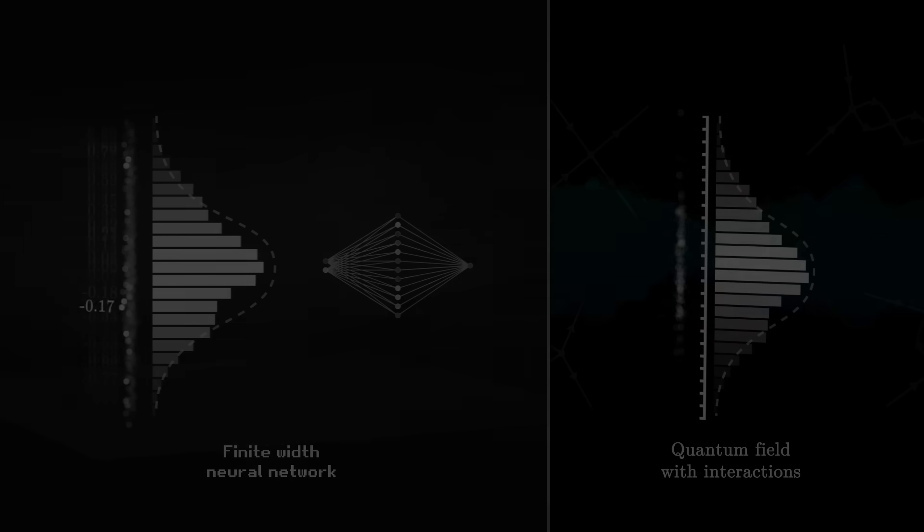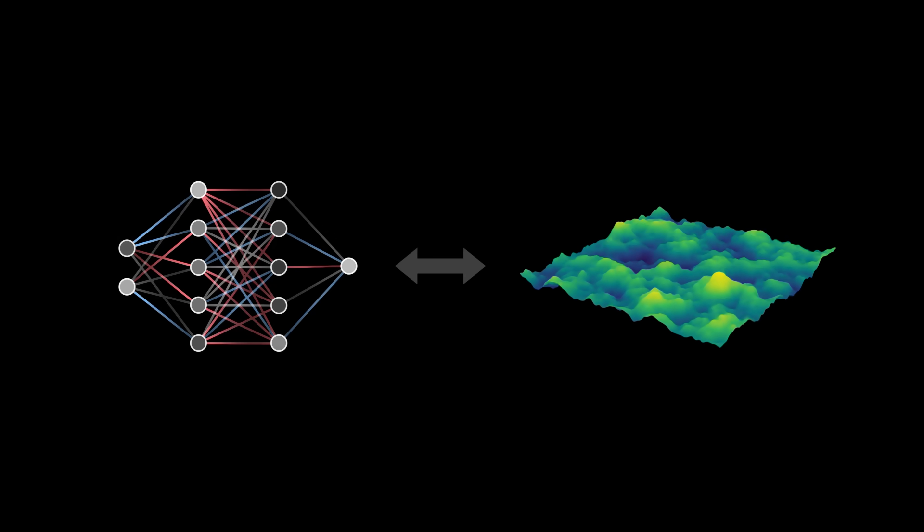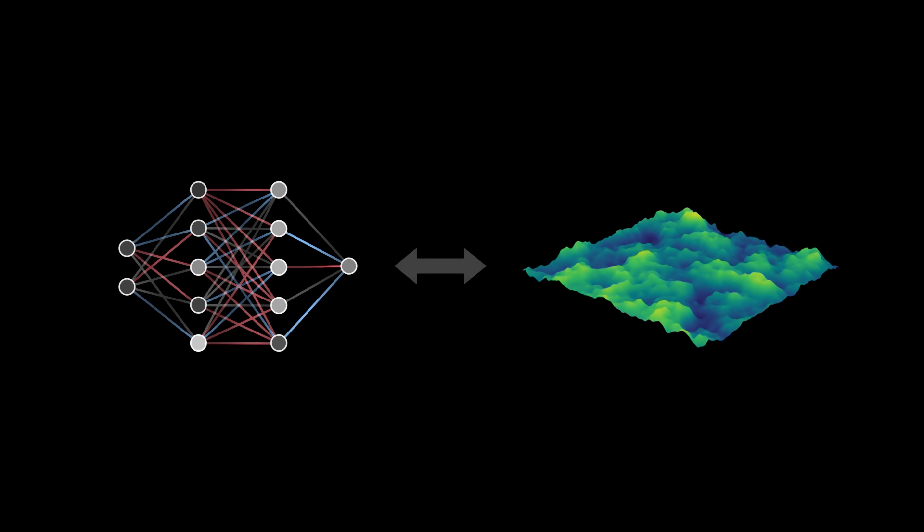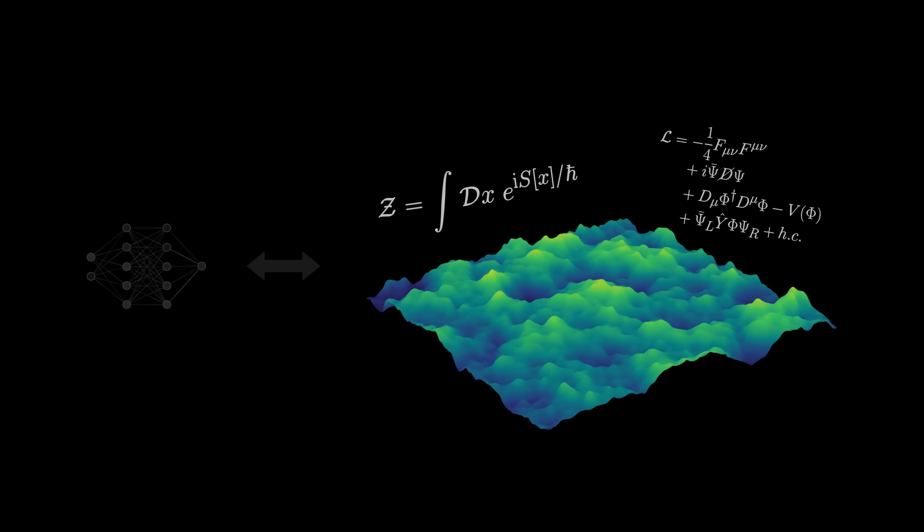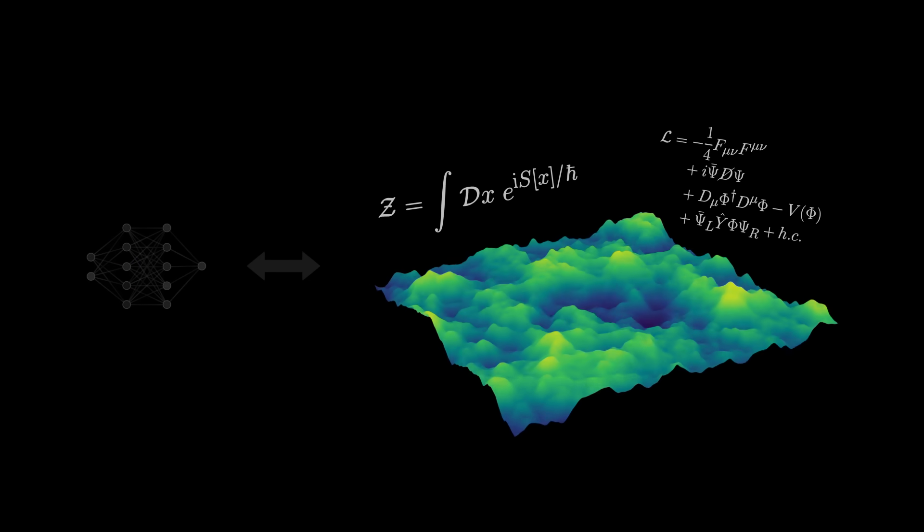There is therefore a strong analogy between the behavior of neural networks and that of quantum fields. At present, quantum field theory is our best description of the world, but it is extremely complex to calculate.